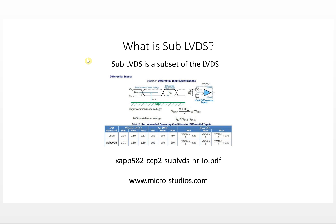Now let's look at Sub-LVDS. Sub-LVDS is a subset of LVDS. This picture is from the Lattice iCE40 datasheet. The main difference between LVDS and Sub-LVDS is the voltage. For LVDS, the VCCIO supply voltage is 2.5V; for Sub-LVDS it is 1.8V. The differential voltage for standard LVDS is 350mV, while for Sub-LVDS it is 150mV minimum.